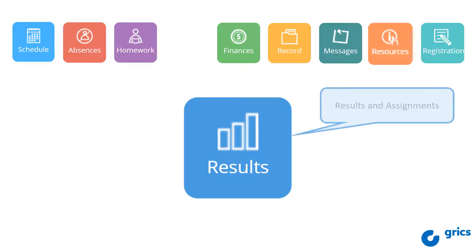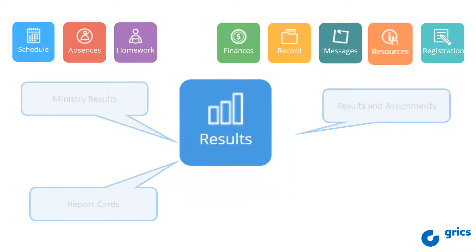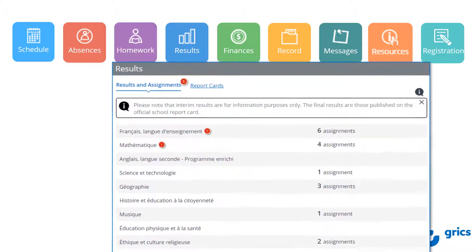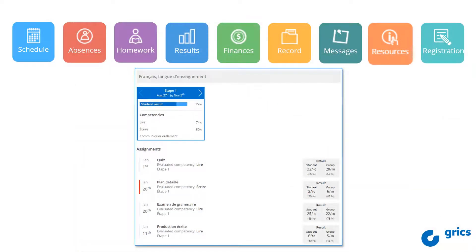The Results tile allows you to view the results of the activities and the ministerial results for the current school year. You can also access report cards for the current and previous years. When you click on the Results tile, you will automatically find yourself in the Results and Assignments section. An indicator will tell you if new results are available. The list of subjects allows you to see the number of assignments for each one. Click on a subject to view the results.